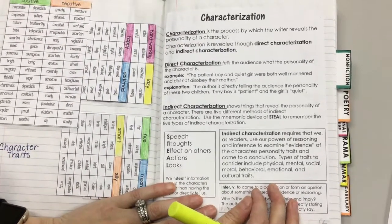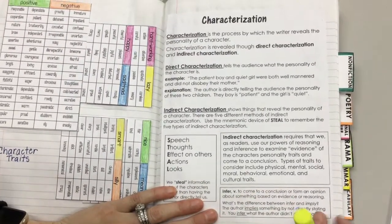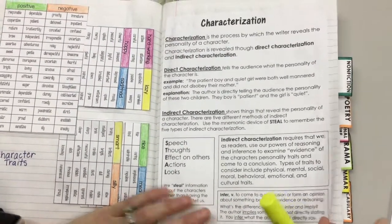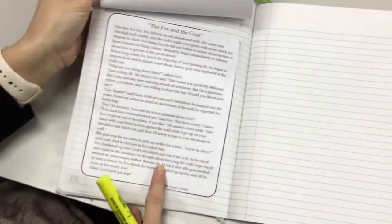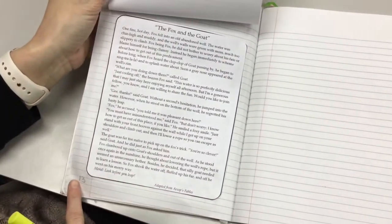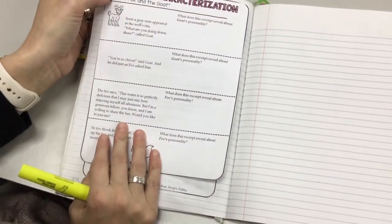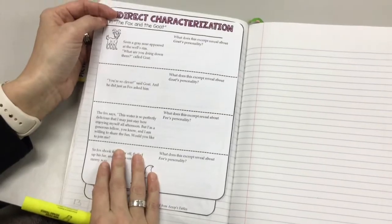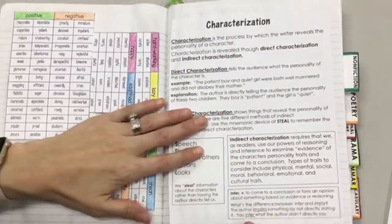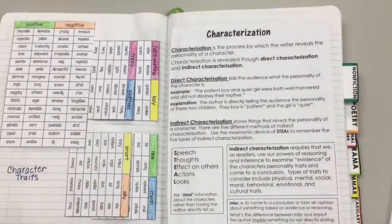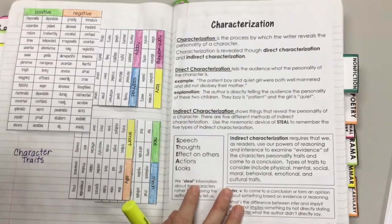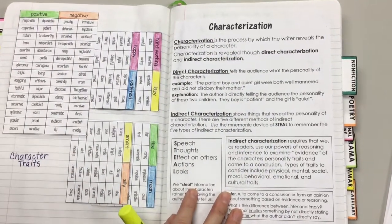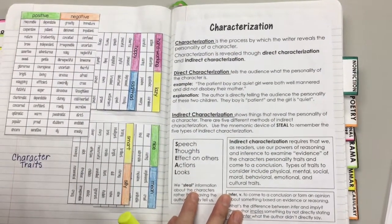So you just read the short fable, The Fox and the Goat, from page 13. Before we do our work here on this page, I want you to go back one page to page 12. We're going to go through the notes on what is characterization.